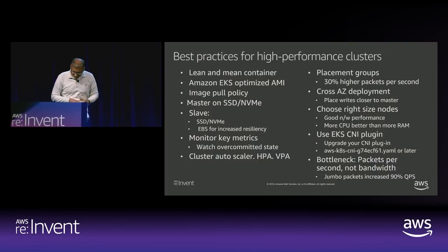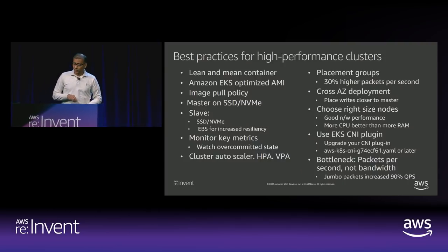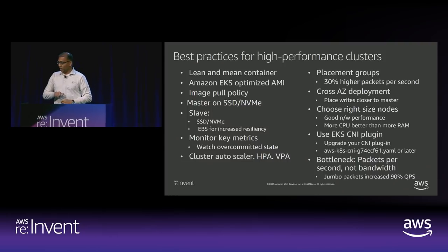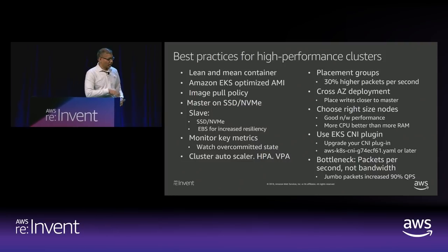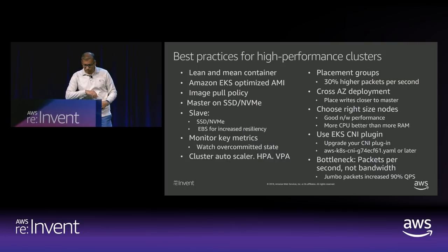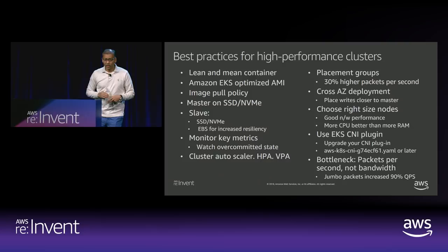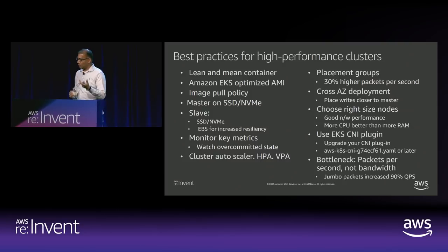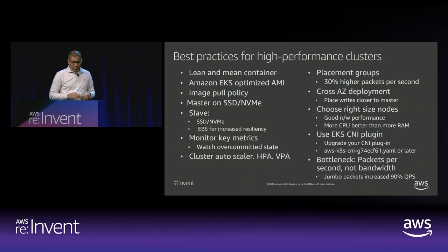Some of the best practices we've learned: keep your container lean and mean — get the gunk out, as Nathan already talked about. Alpine is a good choice. Use the EKS-optimized AMI, which comes with Amazon Linux 2, ENAs and all that built in. Think carefully about image pull policy, especially if you're planning large-scale clusters — you don't know where you'll be throttled, so test it out and plan your rollout strategy ahead of time.